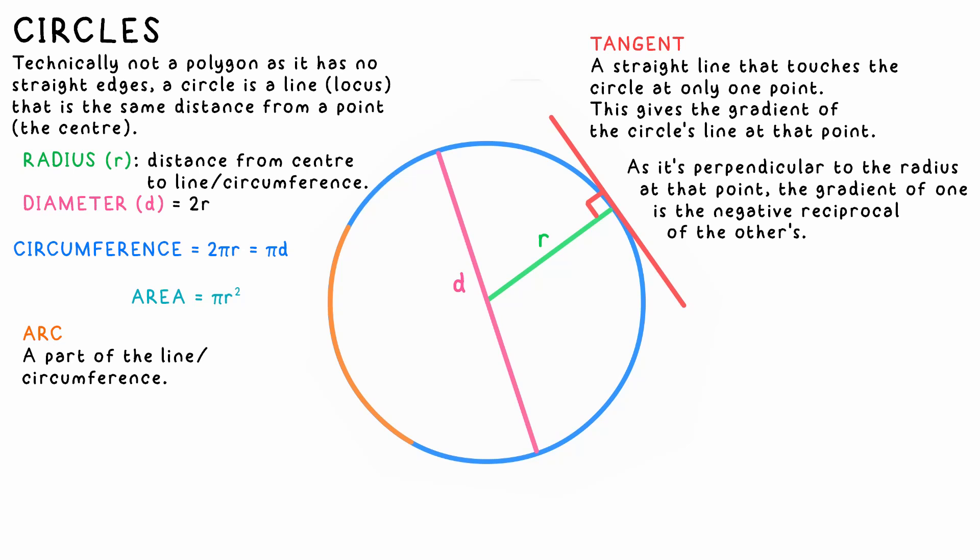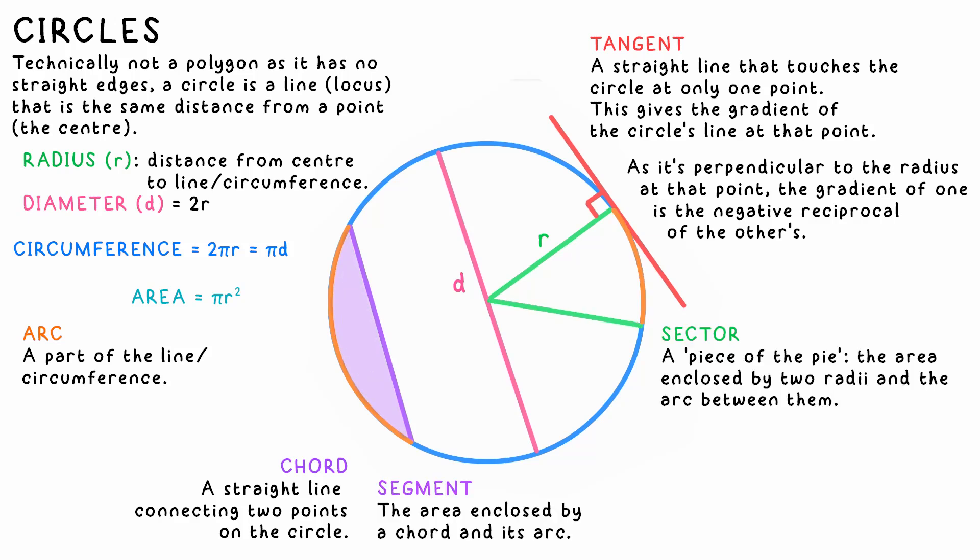An arc is a portion of the circumference between two points on the circle. A chord is the straight line between two points. A segment is the area enclosed by an arc and a chord, whereas a sector is a piece of the pie, the area enclosed by two radii and an arc.